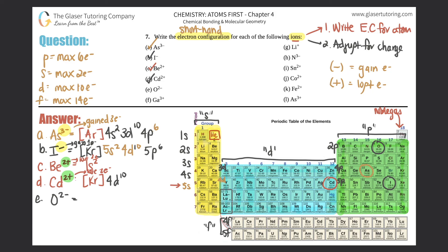E: O²⁻. Oxygen is over here. The noble gas before it is helium, but it's quite small so we'll do the whole configuration. Start with hydrogen: 1s2, then 2s2 passing both boxes, then 2p — go 1, 2, 3, 4, so that's 2p4. Negative 2 means I gained 2 electrons. P has a max of 6, so 4 plus 2 is 6. Erase the 4 and put 6.